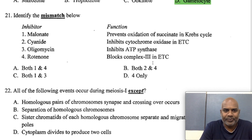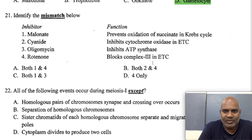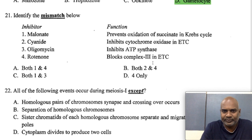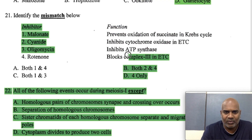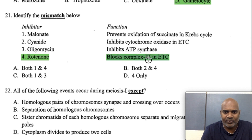Identify the mismatch. Malonate prevents oxidation of succinate in the Krebs cycle by acting as a competitive inhibitor. Cyanide inhibits cytochrome oxidase in the electron transport system. Oligomycin inhibits the ATP synthase enzyme, binding to the F0 particle. Rotenone — the mismatch — is stated to block complex 3, but that is wrong; rotenone blocks complex 1 in the electron transport system. So the answer is the fourth option, rotenone.